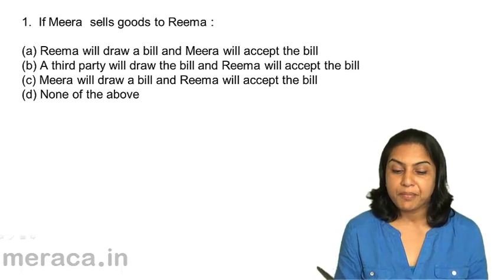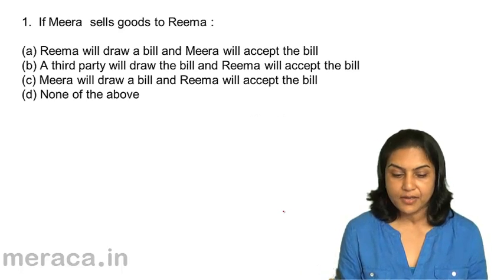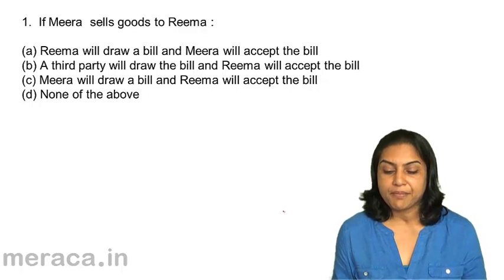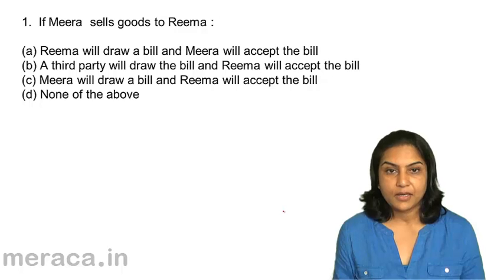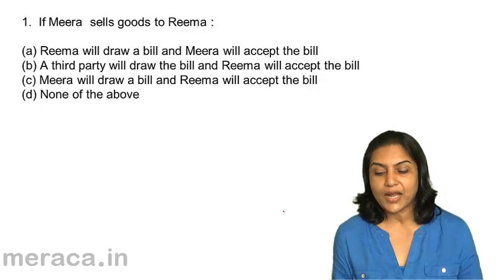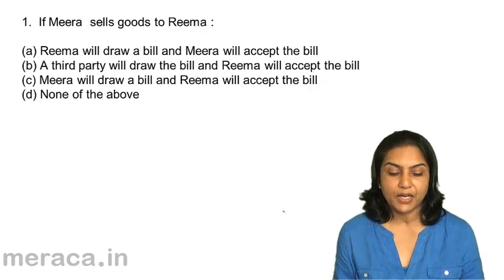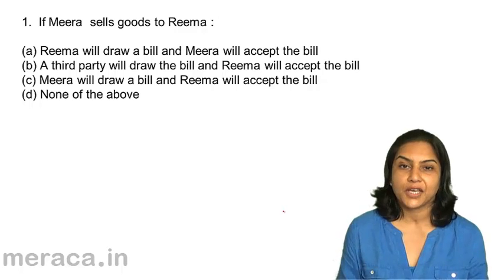If Meera sells goods to Rima: A. Rima will draw a bill and Meera will accept the bill. B. A third party will draw the bill and Meera will accept the bill. C. Meera will draw a bill and Meera will accept the bill. D. None of the above. Which one would be the right answer?